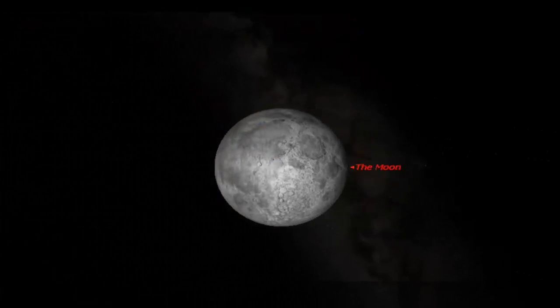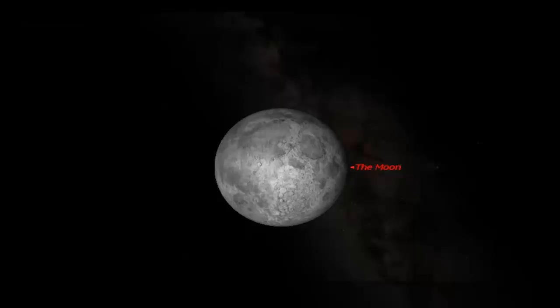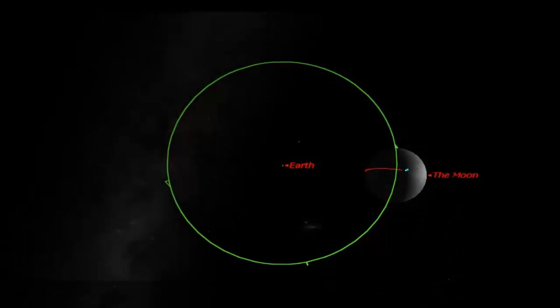But if we change our perspective on this and we go to a more top-down view, we can see the Earth is in the center and the moon has been enlarged and it's got this little red line on it to show the part that's always facing us.